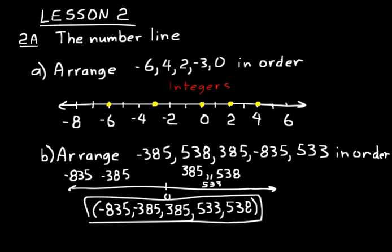One thing people get confused on a lot is comparing negative 835 and negative 385. They might think negative 835 is greater than negative 385, but it's not. It's more negative — a larger negative value, which means it's less than negative 385. Using a number line helps you understand why. So if you ever get confused on the arrangement of numbers, just draw yourself a number line or visualize one in your head to figure out where each number goes.